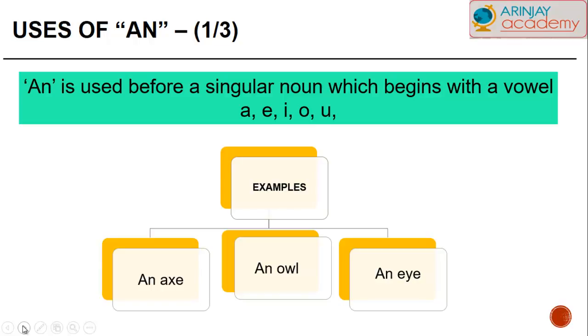For example, we say an axe, an owl, an eye, or an umbrella.